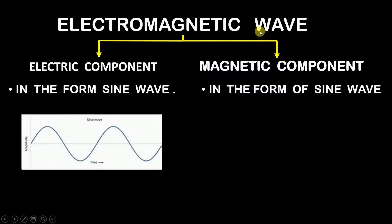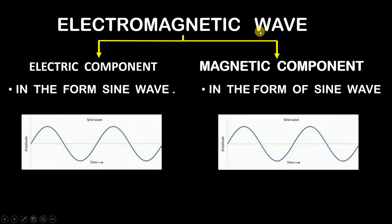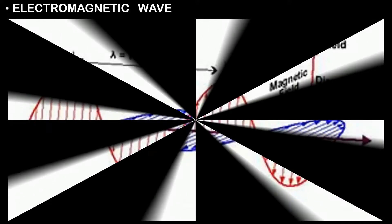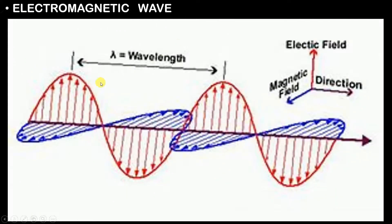I hope you all know how a sine wave looks like. Now a question might arise: how will the two sine waves combine? Looking at the diagram of an electromagnetic wave, you can see a red color sine wave and a blue color sine wave. Let us assume that the red color sine wave is the electrical component and the blue color sine wave is the magnetic component.